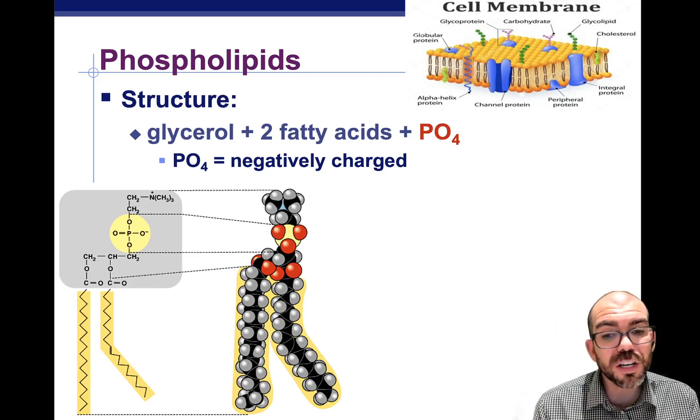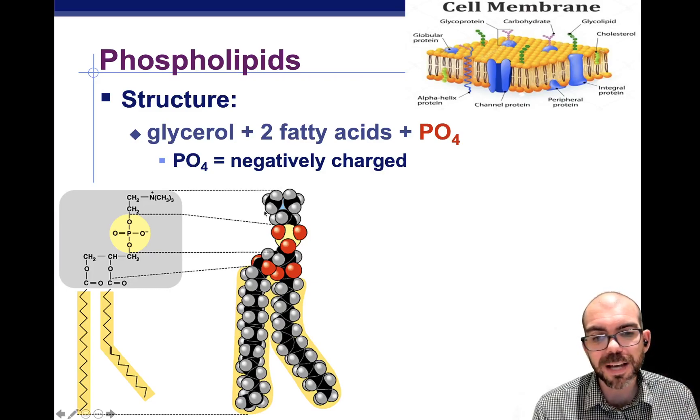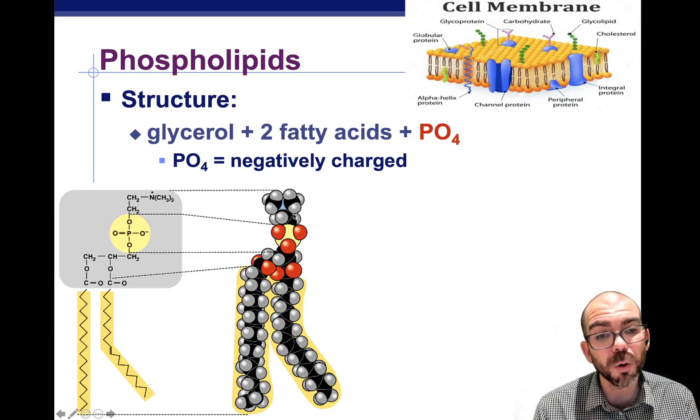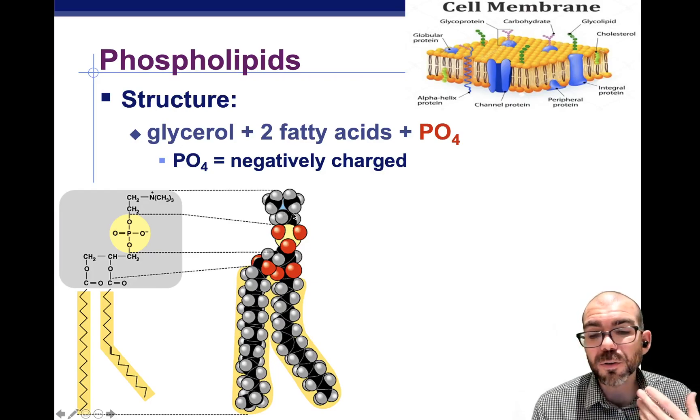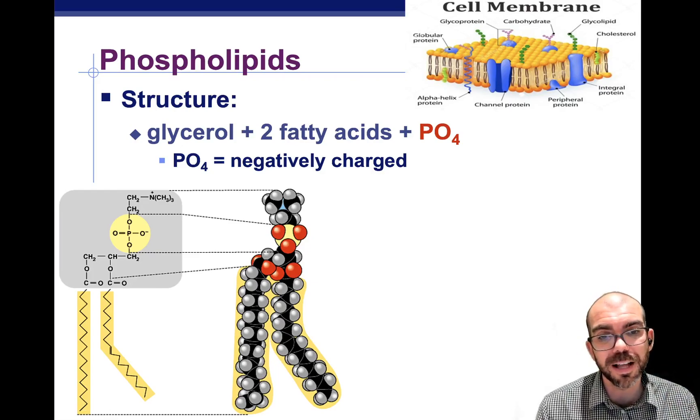Here's just another diagram of the phospholipid. A reminder, what makes them unique is the phosphate group attached to the top. That makes that region polar and attractive to water. These are found in cellular membranes, and we'll learn these in more detail later in this class.